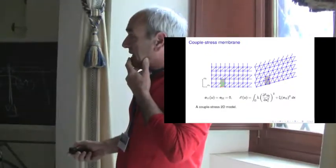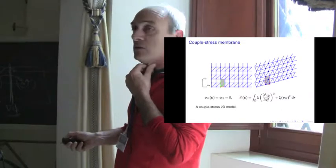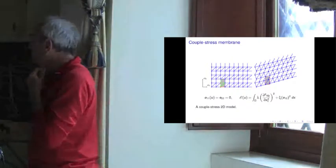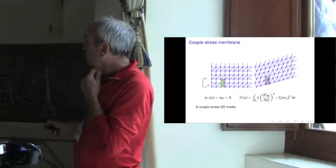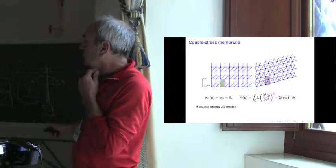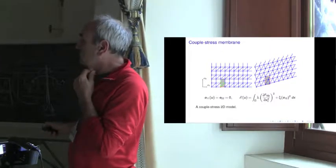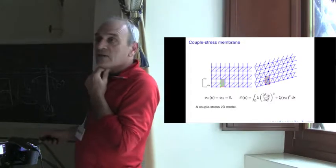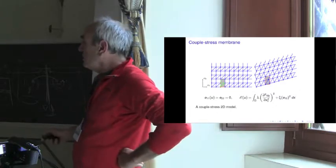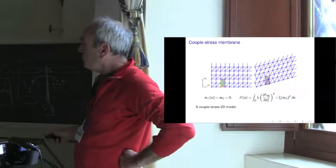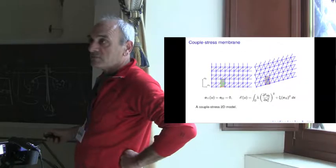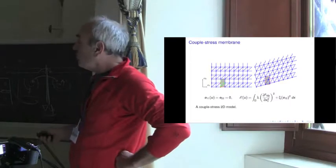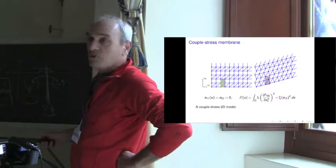Now, you take the square grid and you add a diagonal, but on one row over two. What do you obtain? You obtain something which can have this type of shear, in which each bar here remains undeformed, but here you have some bending of these beams. So in doing this, you have no extension in horizontal and vertical directions, but you pay not only for the shear but also for the bending of the bars. Here you have a bending term, so you have a second gradient material. But it is not a complete second gradient material — it is a couple stress material.